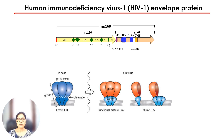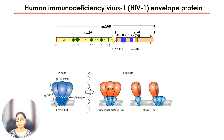GP120 is the surface subunit comprising five constant regions C1 to C5 and five variable regions V1 to V5. The GP41 subunit harbors the fusion machinery. While it is expected that the trimeric envelope is the most abundant form on the virus surface, that is not the case.